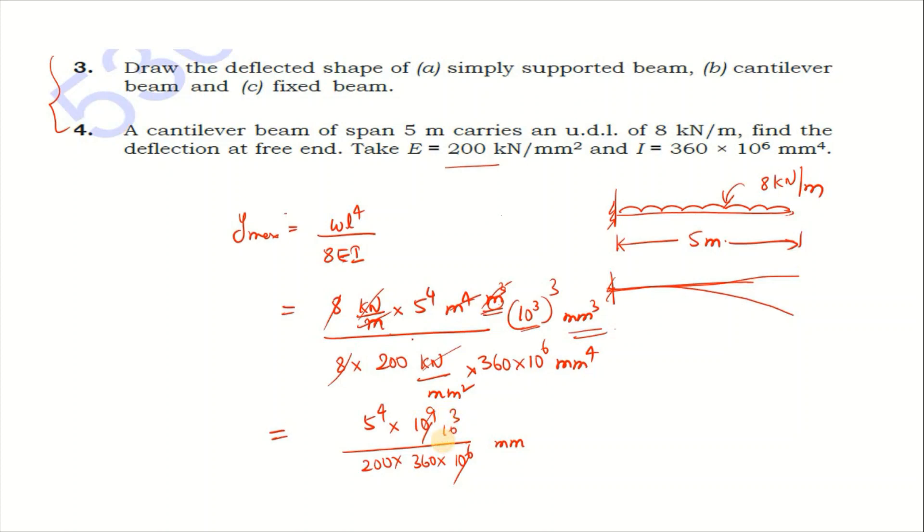5 power 4 into 10⁹ by 200 into 360 into 10⁶ mm. So I will solve: 5⁴ × 10³ divided by 200 divided by 360. The answer is 8.68 mm.